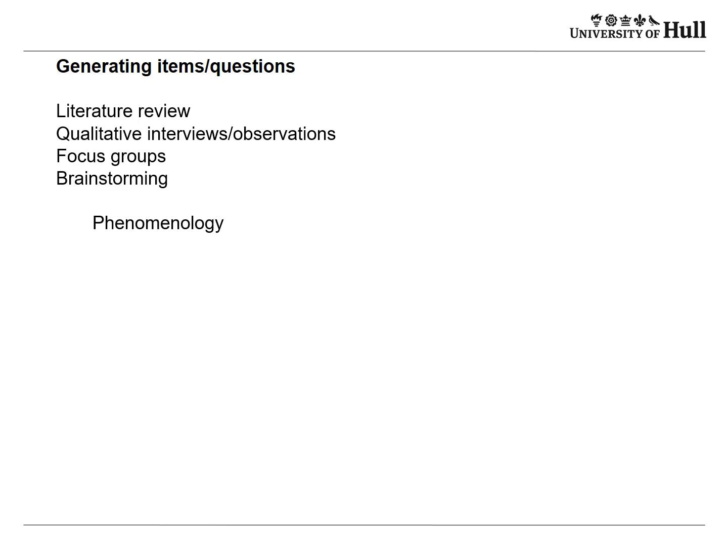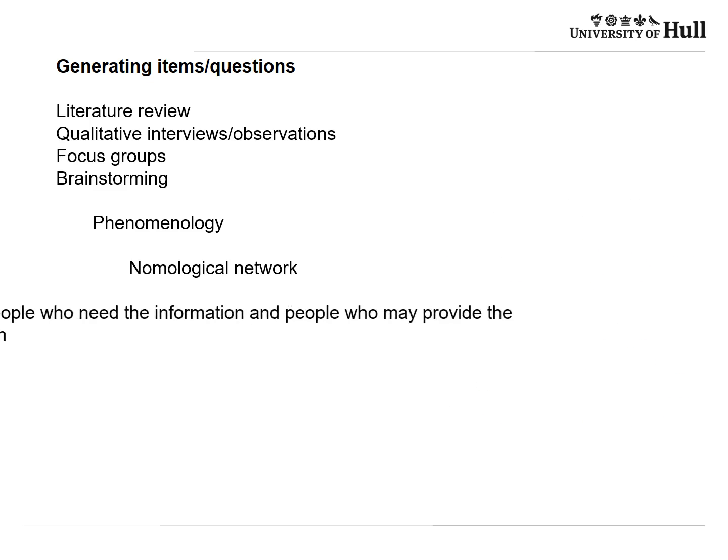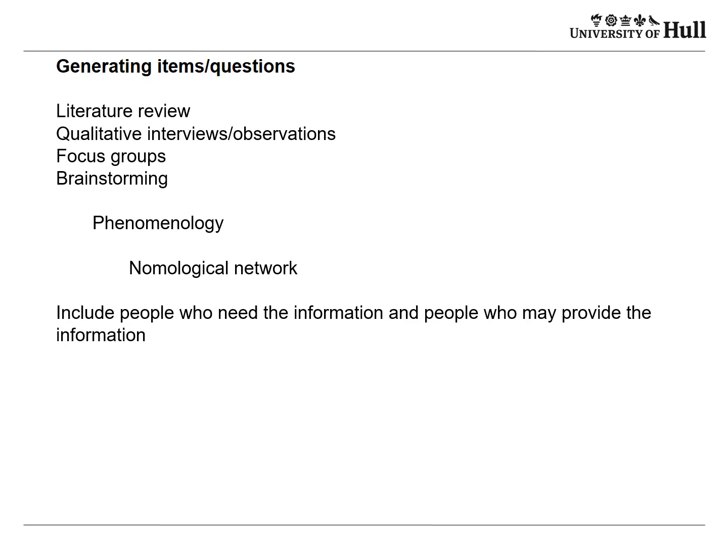What you want to sort out is the phenomenology — the phenomena you're asking about — and to get what's called the nomological network: the network of words around the concept you're trying to investigate. The concept will be your latent trait — something like depression, satisfaction, or quality of life. Include people who need the information and people who may provide the information in designing your questionnaires, so you'll find out how likely respondents will actually respond to specific questions.